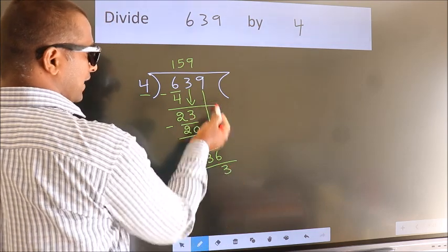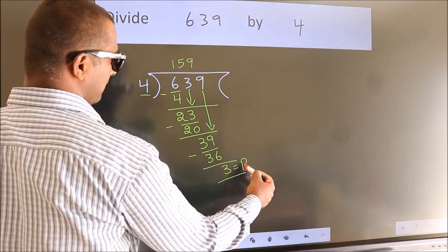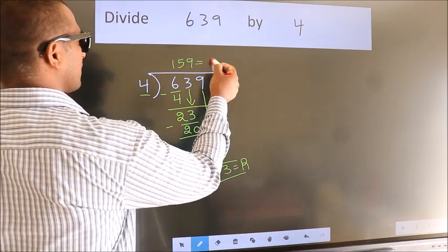No more numbers to bring it down. So we stop here. This is our remainder. This is our quotient.